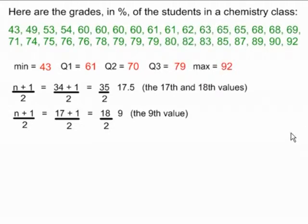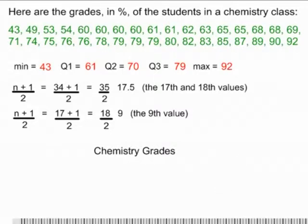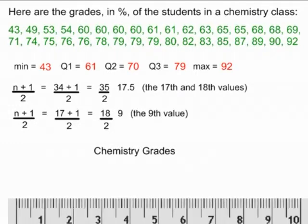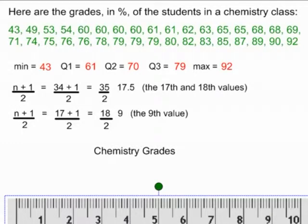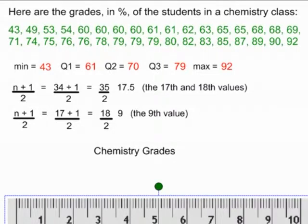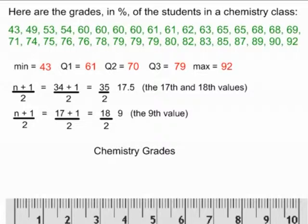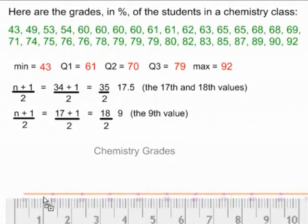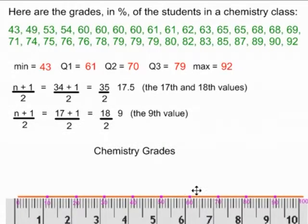Now we're ready to start drawing our diagram. The first thing we need is a title. And I'm going to call it Chemistry Grades. Next, we need to get a ruler and draw our x-axis. I have prepared an x-axis, which is already graduated. I choose to make a 10 cm long line and graduate it by 10s.